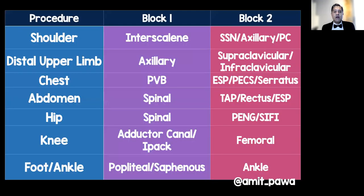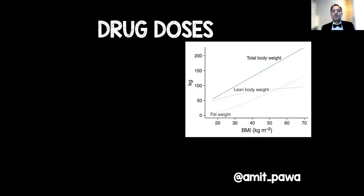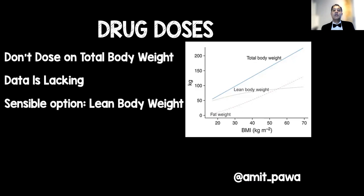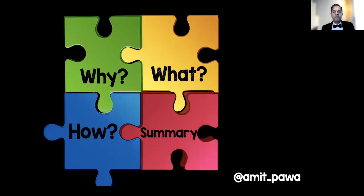A summary slide of these recommendations is available on the slides — many of these blocks correlate with REUK Plan A blocks, which is not a coincidence. Regarding drug doses, using total body weight would clearly not be appropriate; despite limited data, the most sensible approach is to use lean body weight when calculating local anaesthetic doses. There are several online calculators available via QR code to help calculate lean body weight.